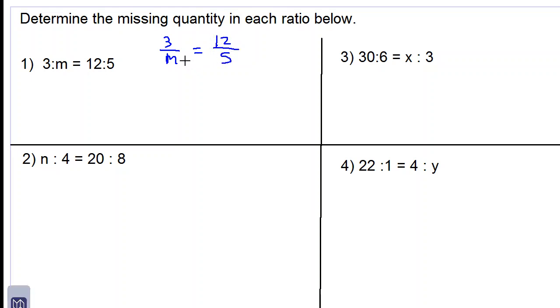We then do cross multiplication, so we multiply along this line m times 12 and we put that equal to a multiplication along this line 3 times 5. m times 12 is 12m and 3 times 5 is 15.